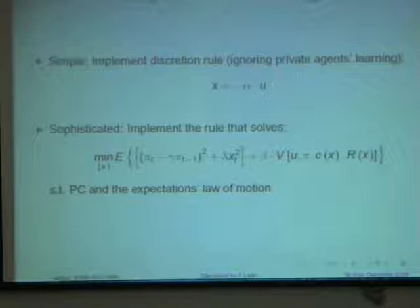Sophisticated policy does this. The X is chosen to minimize, this is like the recursive formulation, to minimize the quadratic loss function, but taking into account, that's what the value function arguments CNR tell you - taking into account that the way you choose policy also affects the learning scheme by the private agent. And this is very nice. It's a very nice control problem.